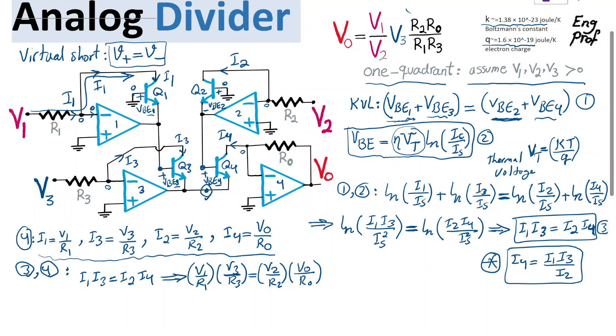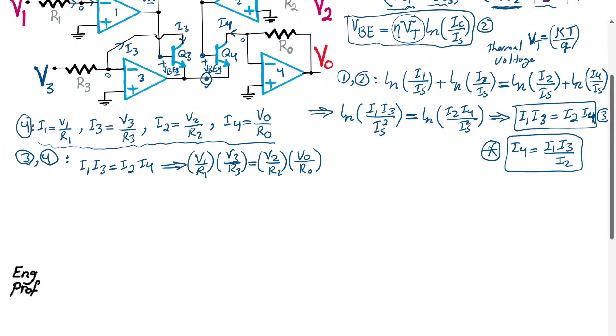if we just simplify this whole thing we get Vout on this side which we keep it on this side Vout is equal to and everything else on the other side so we get V1 divide by V2 multiplied by V3 and then R2*Rout goes to the other side to numerator so it becomes times R2*Rout